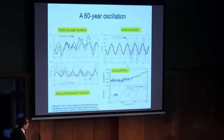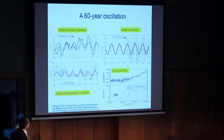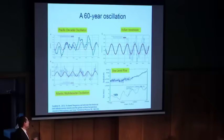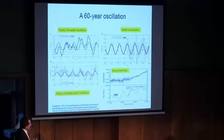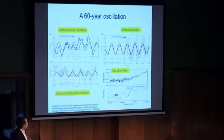Let us start to discuss about this oscillation. As I showed you in the first slides, the temperature actually goes up and down with a big oscillation — about a 60-year oscillation. There was a warming between 1850 and 1880, then a cooling to 1910, then a warming between 1910 and 1940, then a little cooling between 1940 and 1970, then a warming again between 1970 and 2000, and then the temperature was stable. It appears that there is a 60-year oscillation in the data.